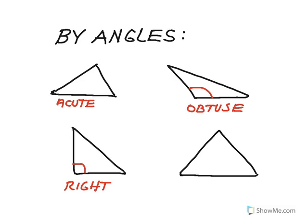And if I have all equal angles — which, if you think about it, will each have to be 60 degrees — that happens to also be equilateral, but we refer to it as an equiangular triangle. We'll later confirm that equilateral triangles are equiangular, and equiangular triangles are equilateral.